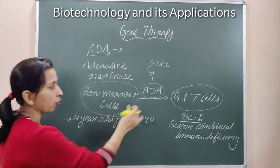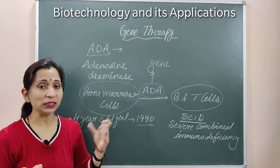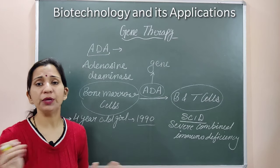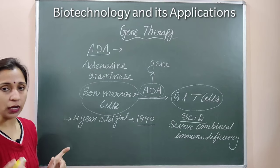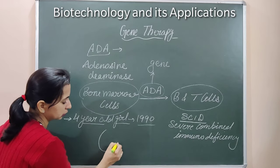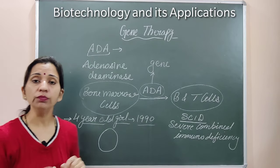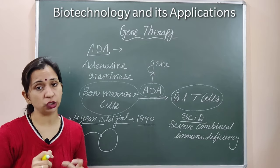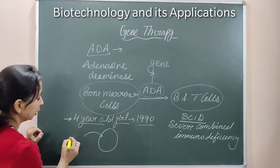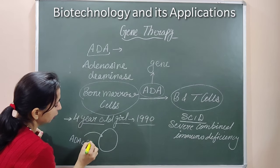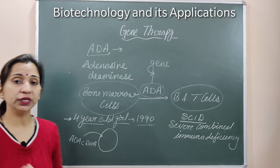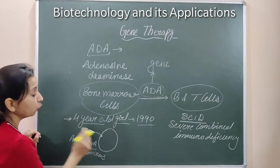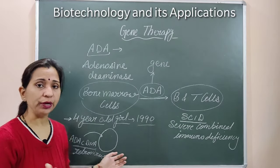In that girl, the same problem existed — ADA was not produced because she had a defective ADA production gene. The gene responsible for ADA production was defective, so adenosine deaminase enzyme was not being formed. The scientists extracted the lymphocytes of this girl from her bone marrow, and then introduced the ADA production gene — the working functional gene — using a vector. The vector which was used here was retroviruses.